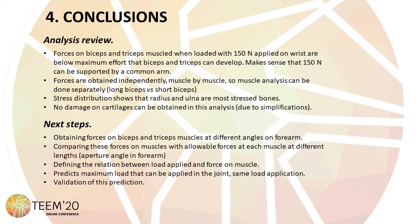The initial objective of the study has been achieved. We have obtained a model of the elbow joint that can be analyzed in different positions. The results of the efforts in the muscle are below the nominal values, which makes sense, and we can analyze the muscles of the joint separately — for example, the long and short heads separately. The next steps to complete the study are to perform the calculation in different positions of the joint, obtaining a relationship between the applied load and the response of the muscle, and draw up a predictive model of muscle capacity as a function of the applied load.